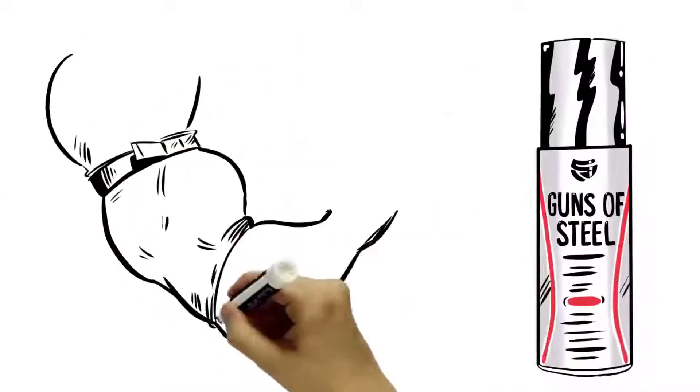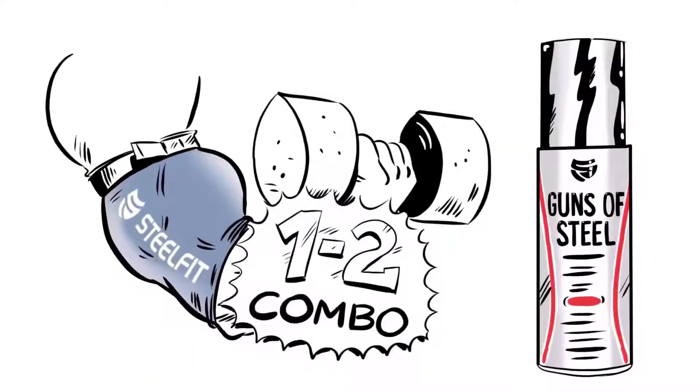Guns of Steel and Steelfit blood flow restriction training sleeves are the 1-2 combo to take your training to the next level.